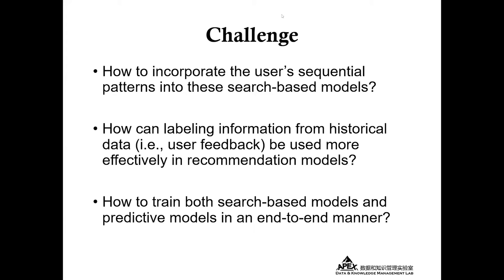Secondly, how can labeling information from historical data be used more effectively in recommendation models? The main existing approach is to use feedback as a label to supervise the model. While some other works show that combining information from labels and features as input to the model can significantly improve performance. However, directly mixing the information will lead to label leakage problems.